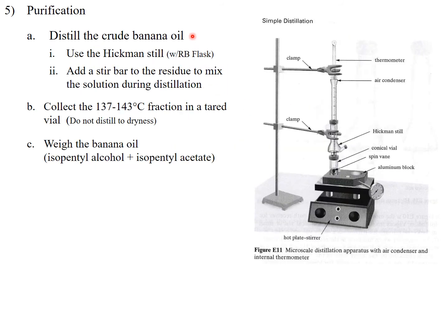For purification, we're going to distill the crude banana oil, which will contain isopentyl alcohol and isopentyl acetate. We're going to use a Hickman still here with a round bottom flask. This picture shows it with a conical flask, but we're going to use a round bottom for better contact. As it heats up, the liquid will move up the tube, condense back down, and collect at the well, where we will remove our product as it distills.